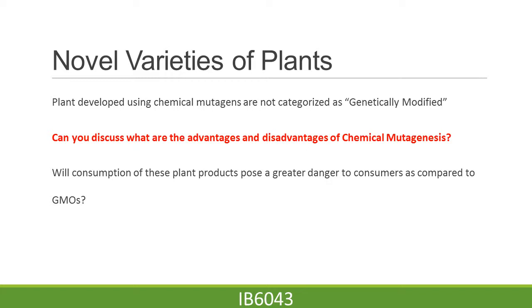This has several disadvantages and advantages. For instance, the usage of chemical mutagens results in random mutations, which may confer specific disadvantages in terms of characteristics and traits, as opposed to genetic engineering which involves the addition of genes which confer specific traits. This is one of the factors which needs to be discussed when developing novel varieties of plants via chemical mutagenesis.